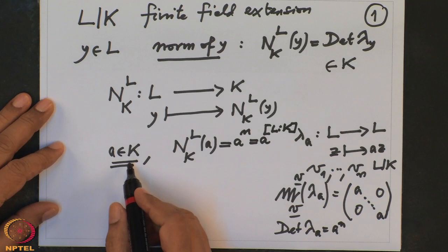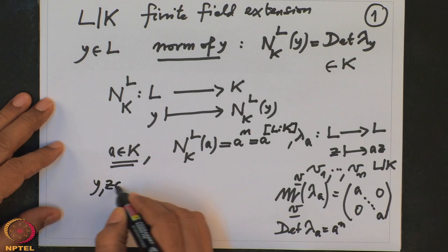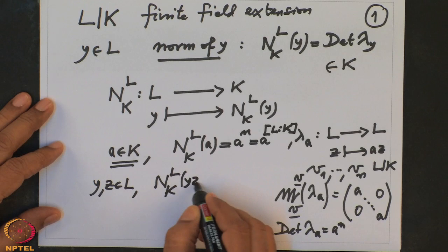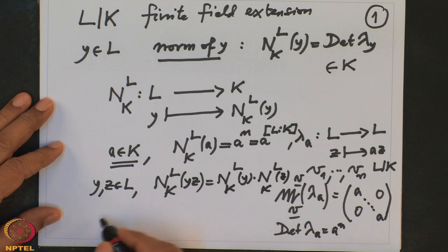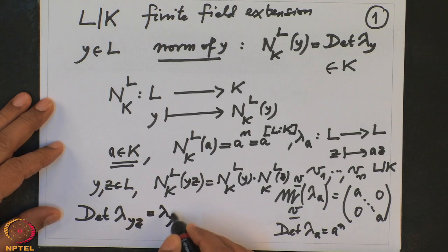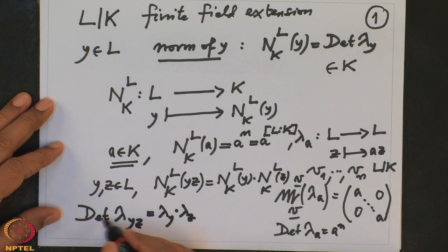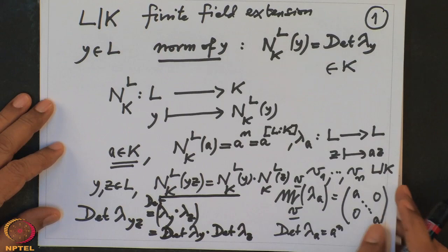Moreover, the norm is multiplicative. If Y and Z are two elements in L, then the norm of YZ equals norm of Y times norm of Z. This follows from the fact that the determinant is multiplicative: the determinant of lambda_{YZ} equals the determinant of lambda_Y composed with lambda_Z, which gives determinant of lambda_Y times determinant of lambda_Z.